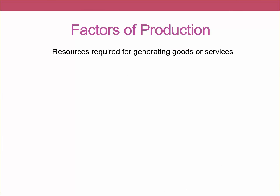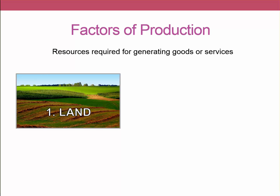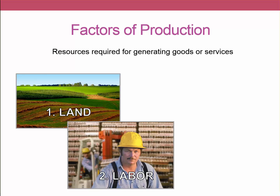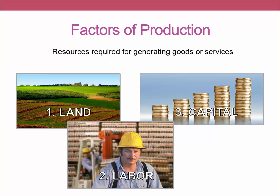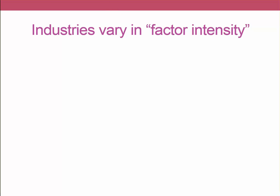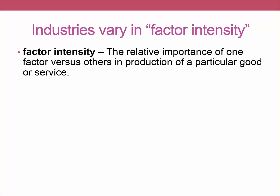To discuss the factor model of trade preferences, we need to understand the basic factors of production — that is, the resources required for generating goods or services in any economy. At the most basic level there are three factors of production: land, labor, and capital. It's also important to understand that different industries vary in what's called factor intensity, meaning the relative importance of one factor versus others in the production of a particular good.